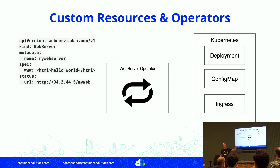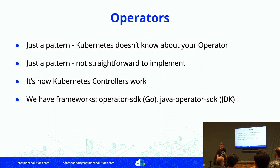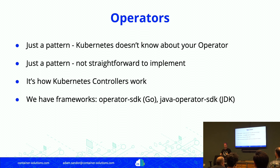There are frameworks for implementing operators. What you need to do is watch your objects in the Kubernetes API server for any events — new object created, something updated — and then execute logic and write back status. There are two main frameworks: the Operator SDK written in Go (which also somehow supports Ansible), and the Java Operator SDK, started a few months ago to make this possible in Java.